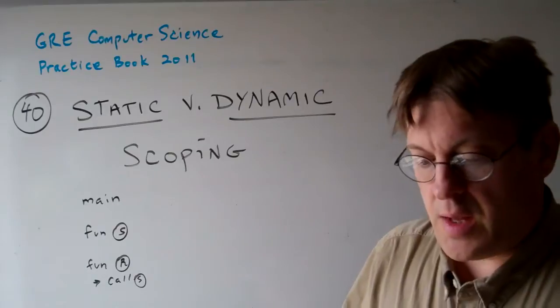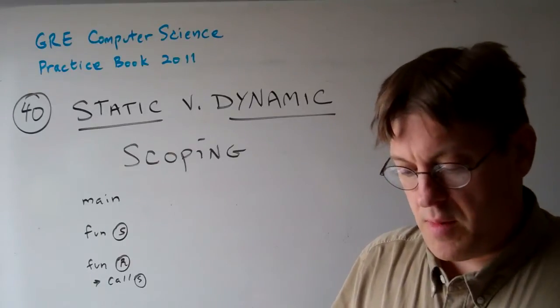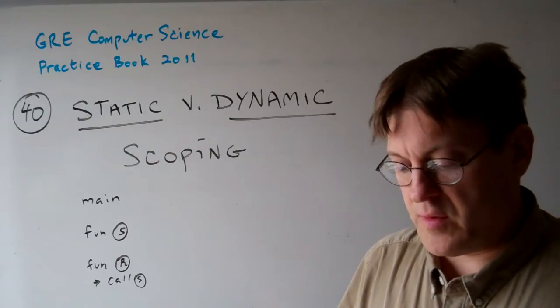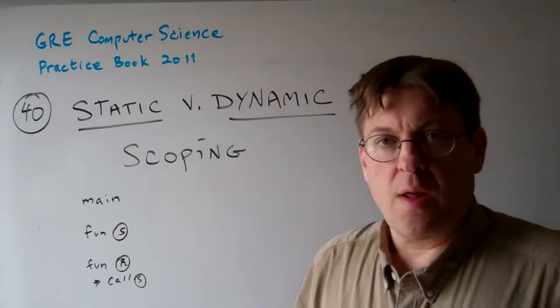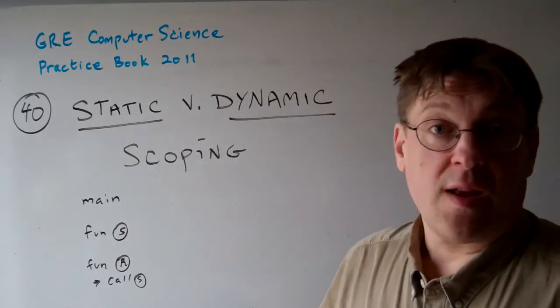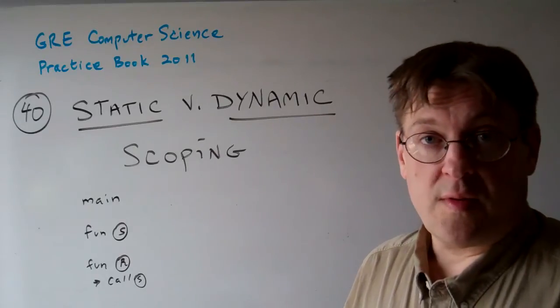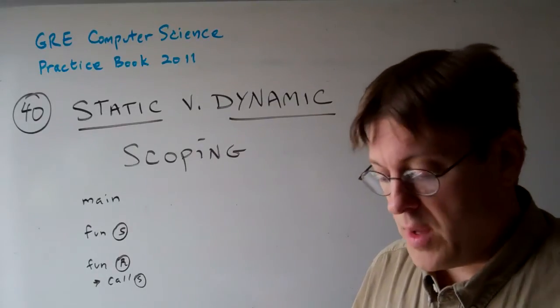Question 40. Consider the following pseudocode program and what's the output of the program if the pseudocode uses either static or dynamic scoping. The key to this whole thing is understanding what the difference is between static and dynamic scoping.